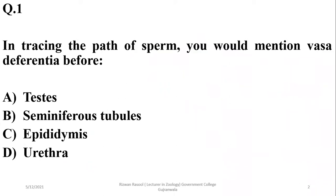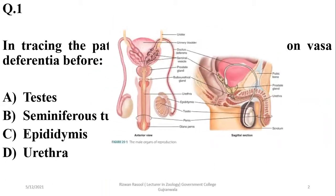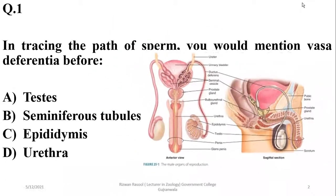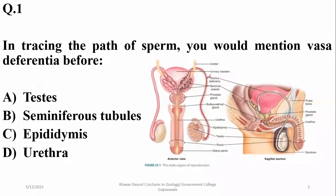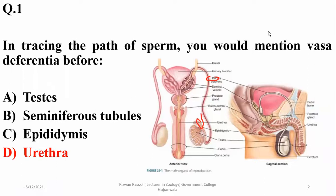Vas deferens, or the main sperm duct, is located after the testes, seminiferous tubules, and epididymis, but before the urethra. So the right option will be that it lies before the urethra and after these structures.